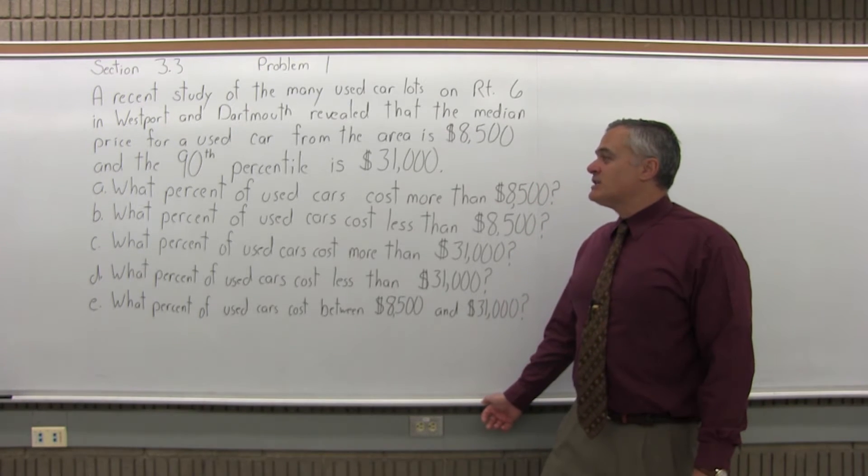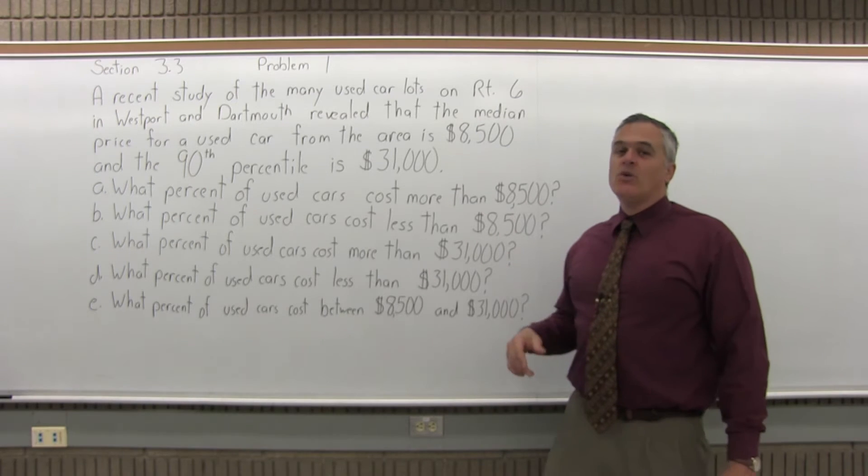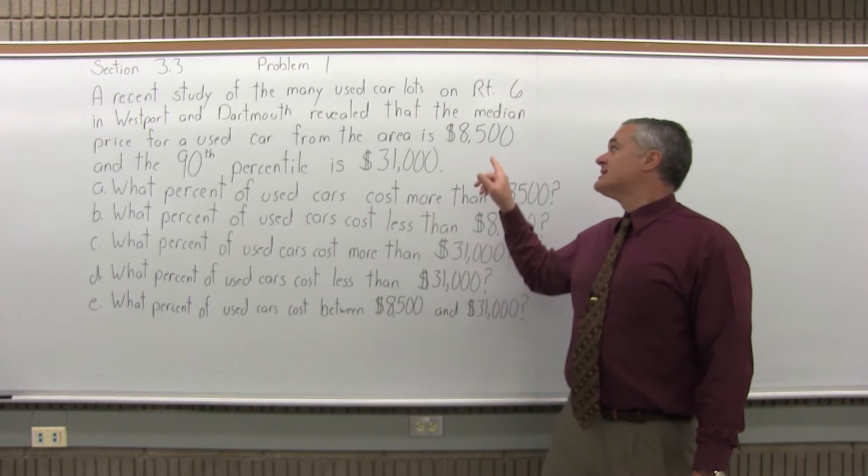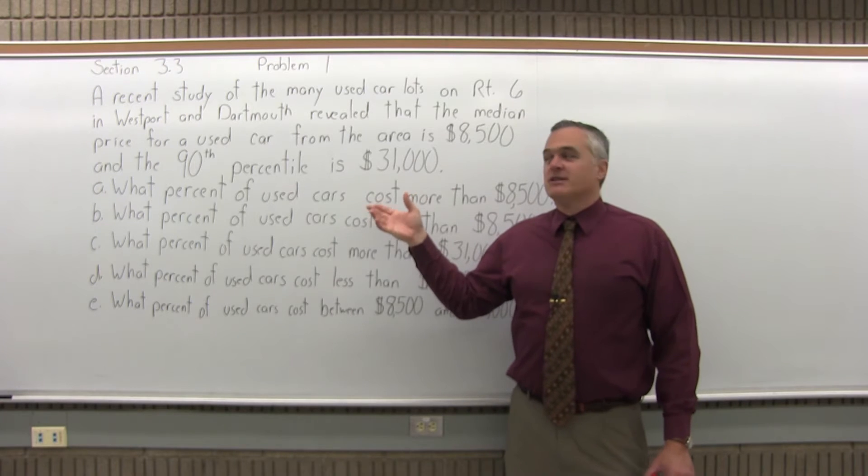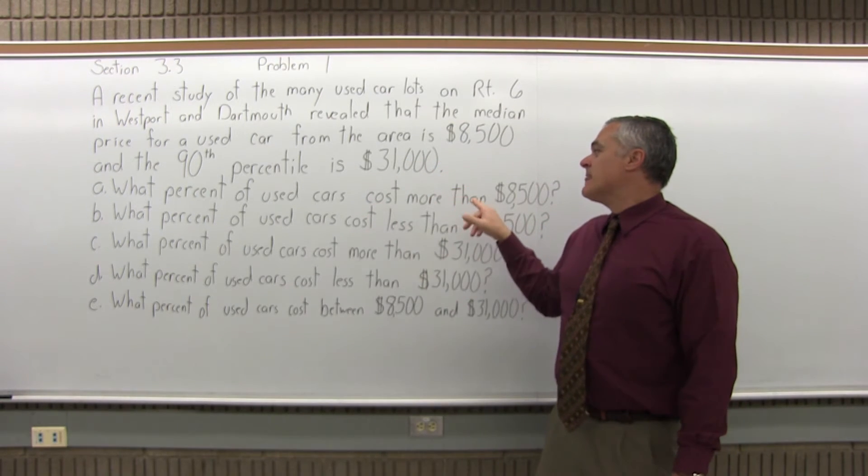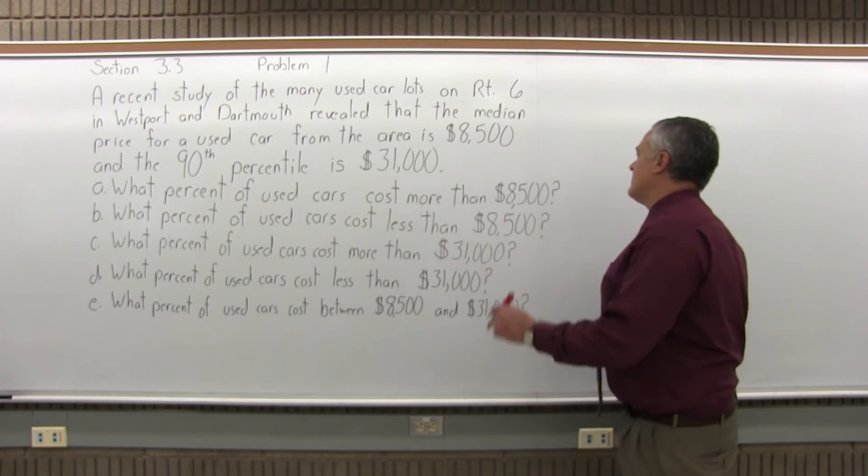Part A asks what percent of used cars cost more than $8,500. What you have to realize is that that is the median price and the median is in the middle of your list of data, in this case the list of car prices. So that would mean that 50 percent of the used cars cost more than $8,500.